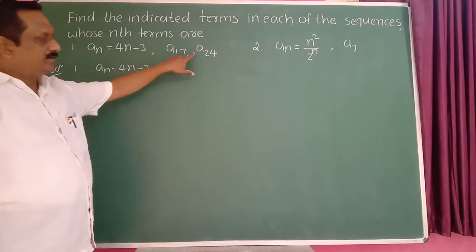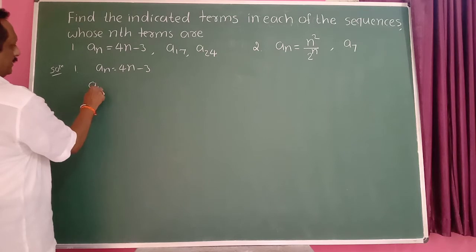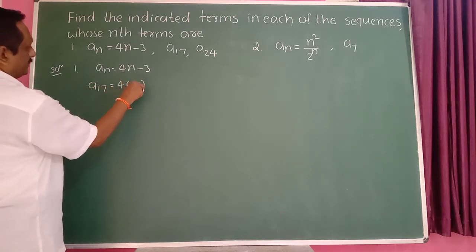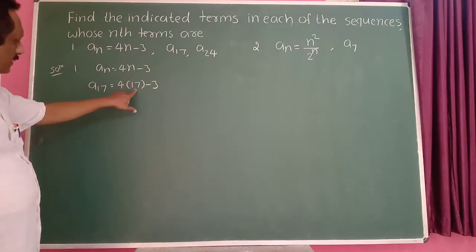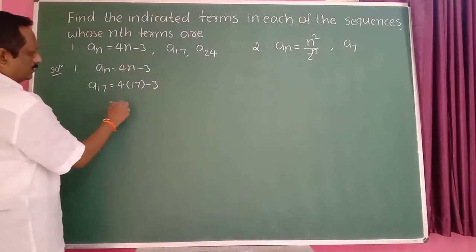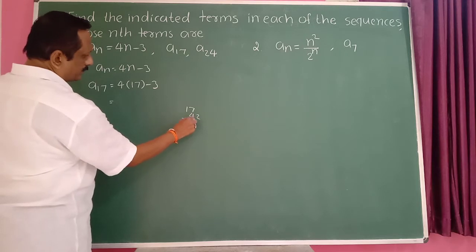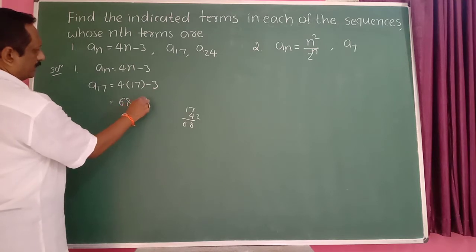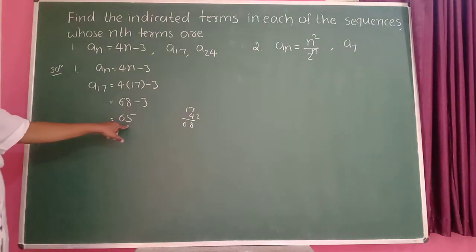Find the 17th term as well as the 24th term. So the 17th term is equal to 4 into 17 minus 3. Put n equal to 17. Therefore this is equal to 17 into 4, which is 68. So 68 minus 3 becomes 65. So the 17th term is 65.